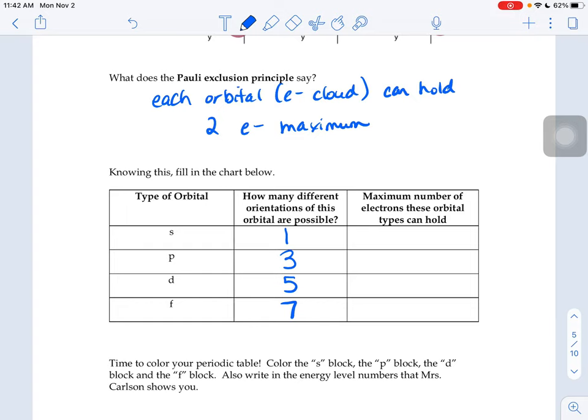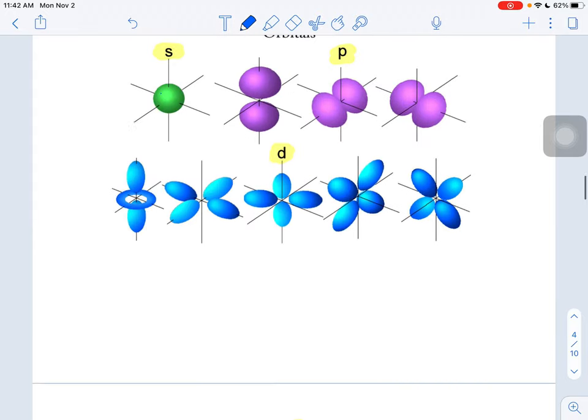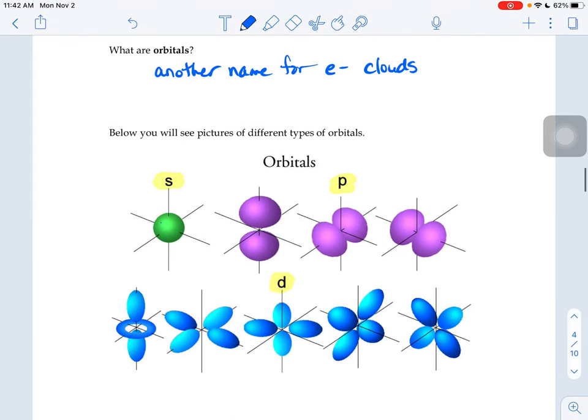Well, if each one of those clouds can hold up to two electrons maximum, what that means is, I could put two electrons into this S cloud, let's say. There's one, there's one. And then it fills up. You can't fit any more electrons into that orbital. You can't fit any more electrons into that electron cloud.